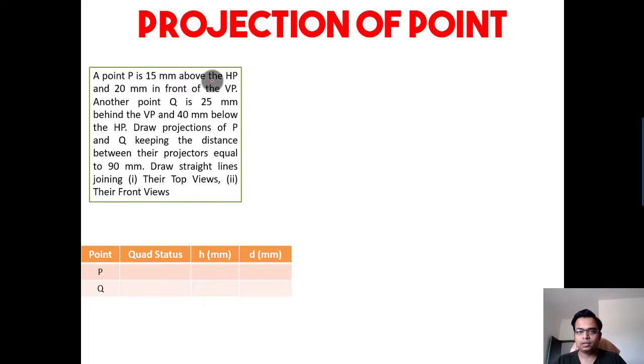Above the HP, we've got two quadrants: quadrant one and two. If it lies in front of the VP, that means it is quadrant number one. If it lies behind the VP, then it is quadrant number two.